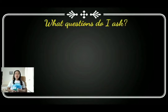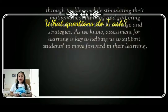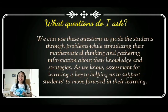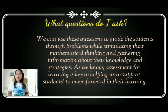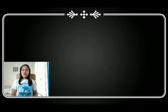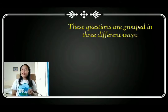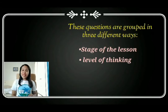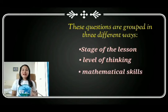Aspect number two: what questions do I ask? We can use these questions to guide students through problems while stimulating their mathematical thinking and gathering strategies. Assessment for learning is key to helping us support students to move forward. The questions are grouped in three different ways: (1) stage of the lesson, (2) level of thinking, and (3) mathematical skill.